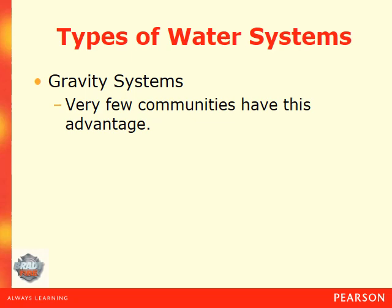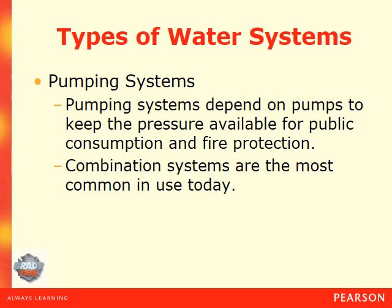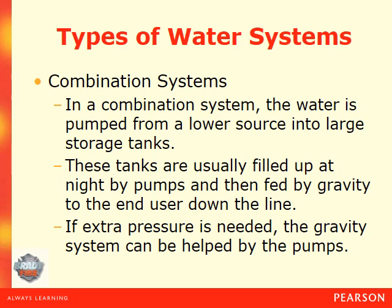Unfortunately, few communities have a gravity system. A pumping system depends upon pumps to keep the pressure available for public consumption and fire protection. Combination systems are the most common used today — they use a cross between gravity systems and pumps to feed the municipality and ensure that water demands are met. In a combination system, water is pumped from a lower source into a large storage tank. These tanks are usually filled at night by pumps and then fed by gravity to the end user.